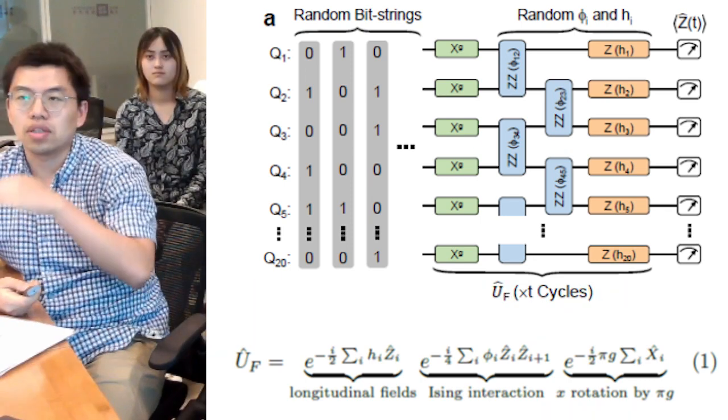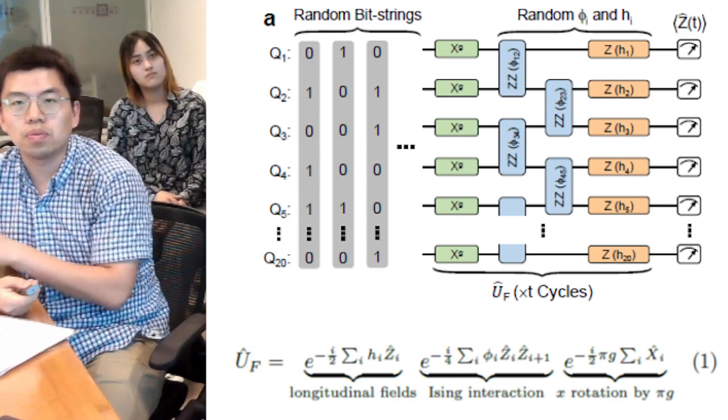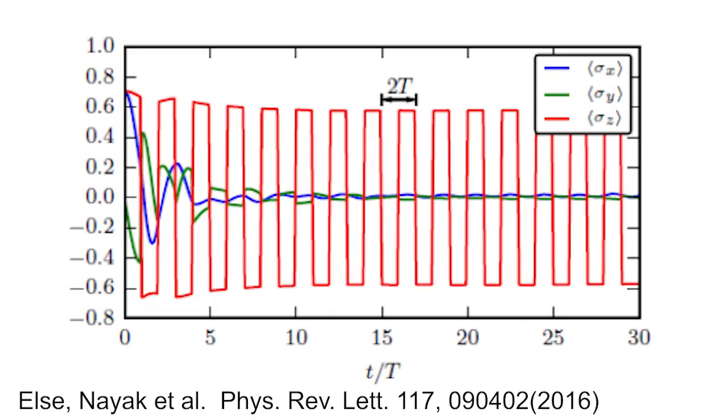So in order to have this kind of time crystal, you need all these three steps. The way to observe such a time crystal is to measure the expecting value of sigma z, which is the Pauli operator on the z-axis. If you drive the system at the frequency with period T, you will see that the expectation value of sigma x and sigma y does not oscillate. It just simply decays. But sigma z oscillates at the frequency of 2T.